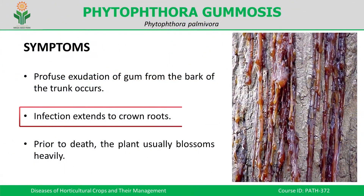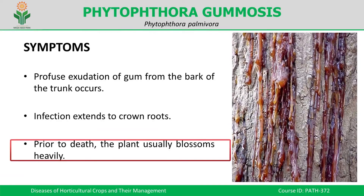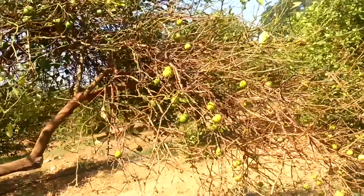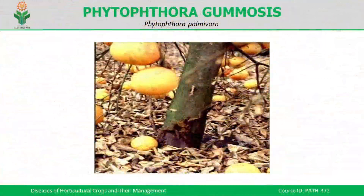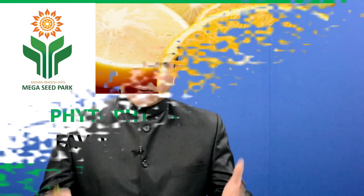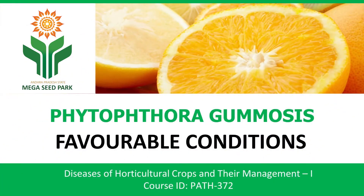The infection is not only confined to the stem but also goes inside into the crown root system. Prior to the death of the plant, it will generally blossom very heavily — profuse flowering of the infected plants is observed. On screen you can see the infected basal portion of the stem and the production of the gummy substance. Now we are going to learn about the favorable factors — the predisposing conditions that allow the pathogen to multiply.